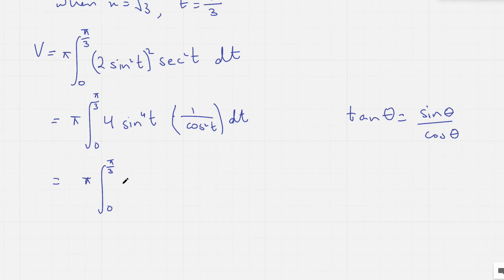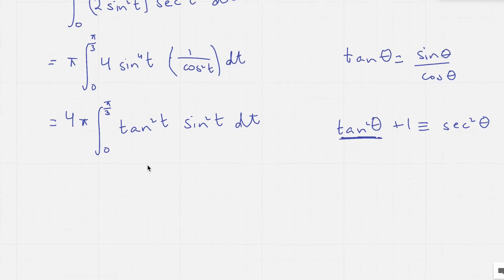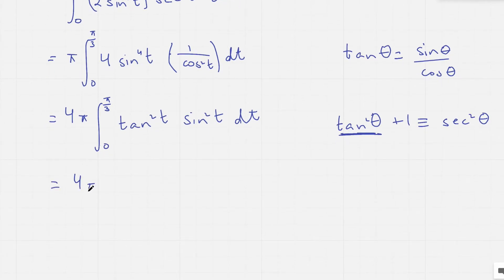So taking 4 outside the integral, we have 4 pi, and then tan squared t times sin squared t with respect to t. Now we know the identity: tan squared t plus 1 equals sec squared t, so rearranging, tan squared t equals sec squared t minus 1. So this tan squared t can be replaced by sec squared t minus 1.